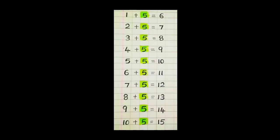Step three — you can say with me. One plus five is six. Two plus five is seven. Three plus five is eight. Four plus five is nine. Five plus five is ten. Six plus five is eleven. Seven plus five is twelve. Eight plus five is thirteen. Nine plus five is fourteen. Ten plus five is fifteen. Once again: one plus five is six. Two plus five is seven. Three plus five is eight. Four plus five is nine. Five plus five is ten. Six plus five is eleven. Seven plus five is twelve. Eight plus five is thirteen. Nine plus five is fourteen. Ten plus five is fifteen.